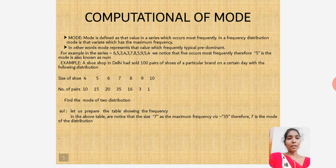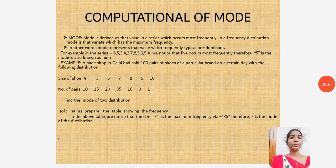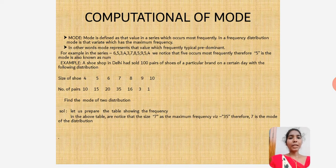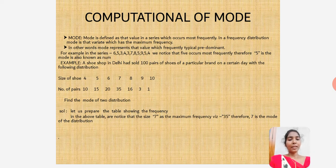Now I would like to discuss about mode. The mode is defined as the value in a series which occurs most frequently. In a frequency distribution, the mode is the variant which has the maximum frequency.